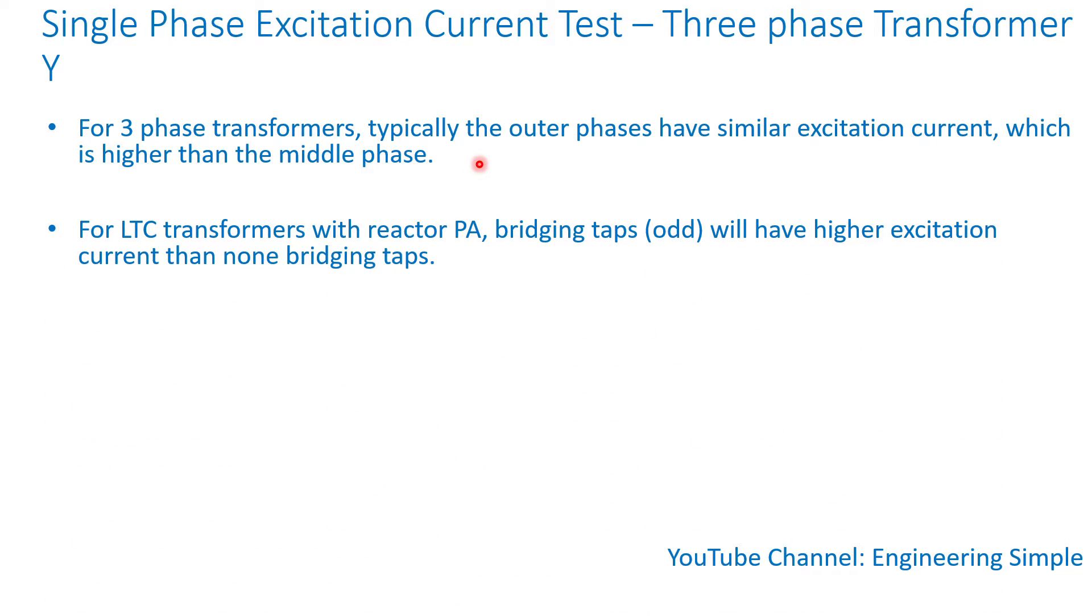For transformers with LTC or load tap changer with a reactor or preventive autotransformer, bridging taps, basically taps without numbers one, three, five, seven, nine, and so forth, will have higher excitation current than non-bridging taps.